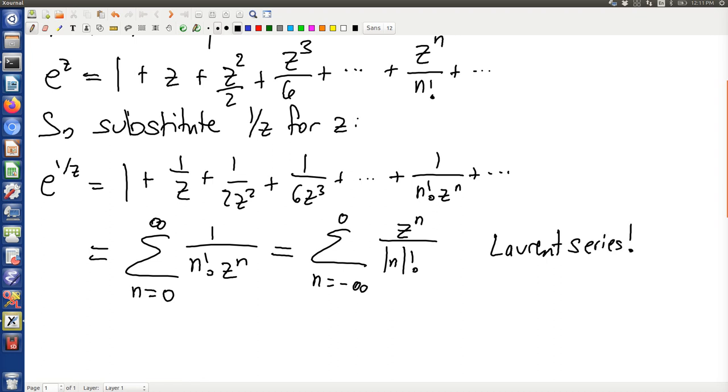That gives you the Laurent series, and it indicates that this is entirely possible to have something that's structured like a Laurent series, which is to say all those exponents of x being in the denominator, negative exponents. And it converges perfectly fine.